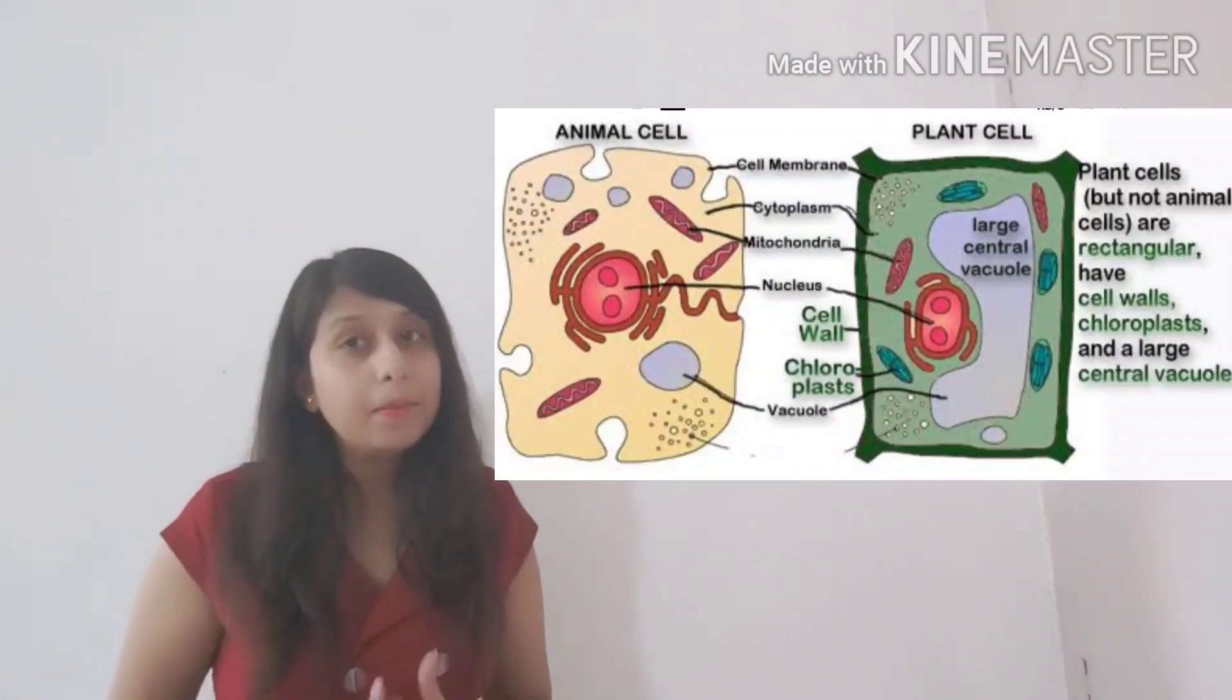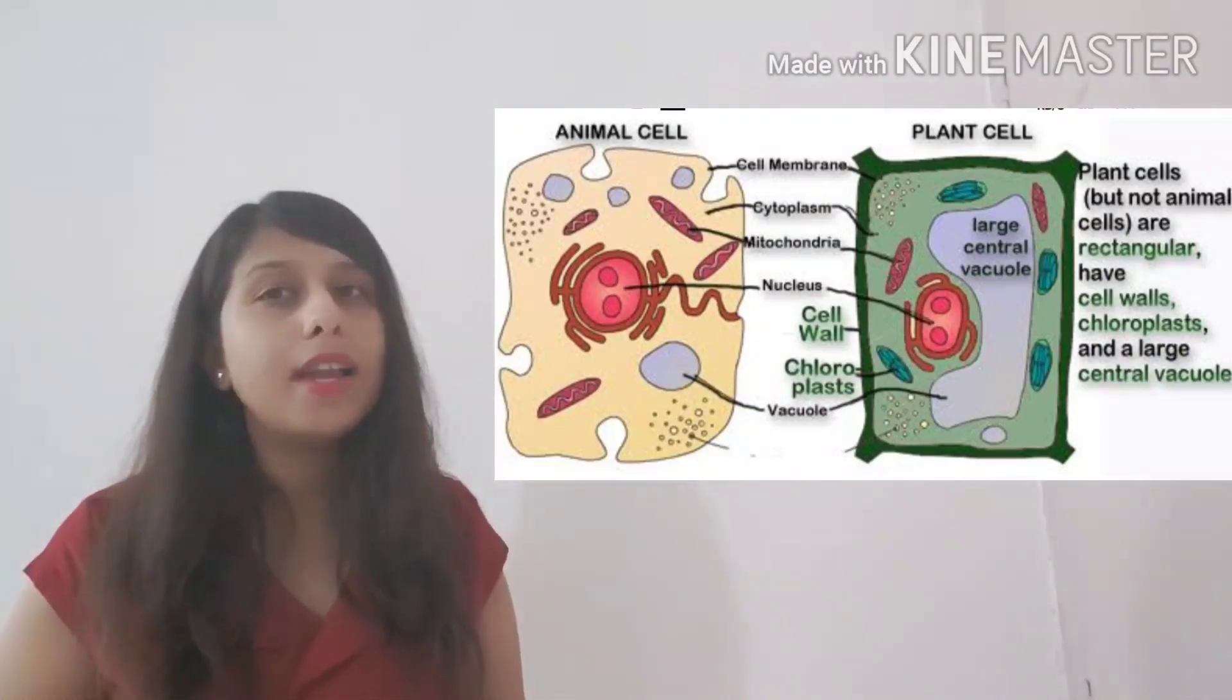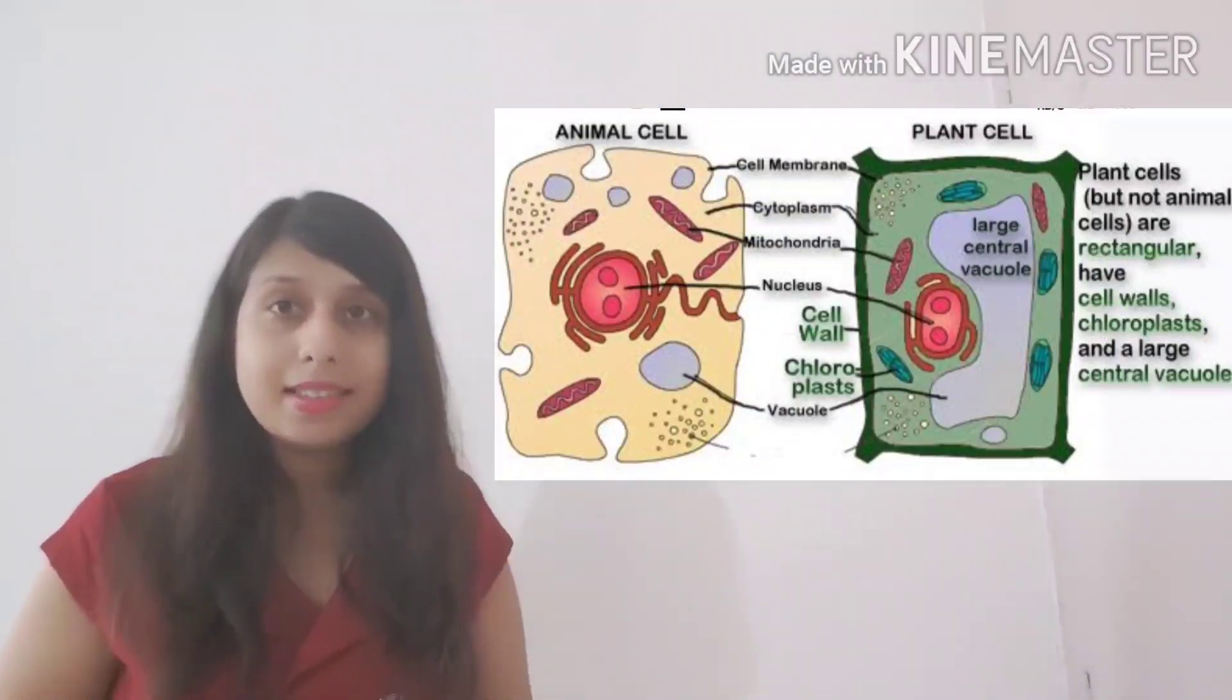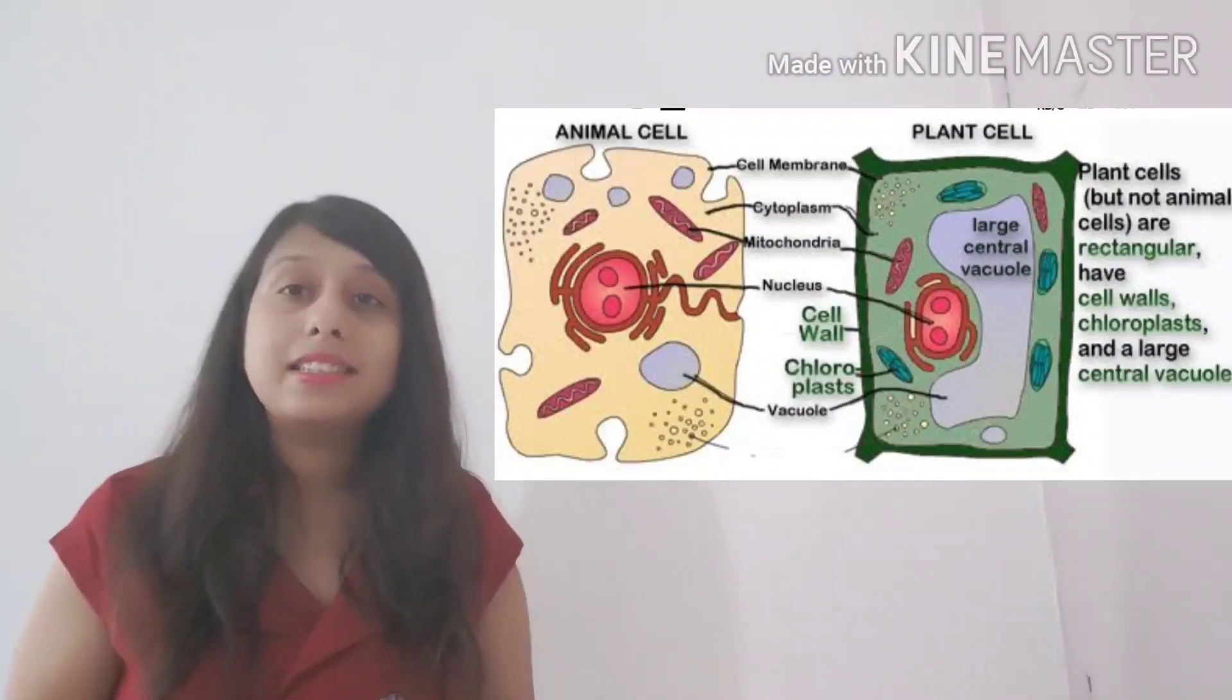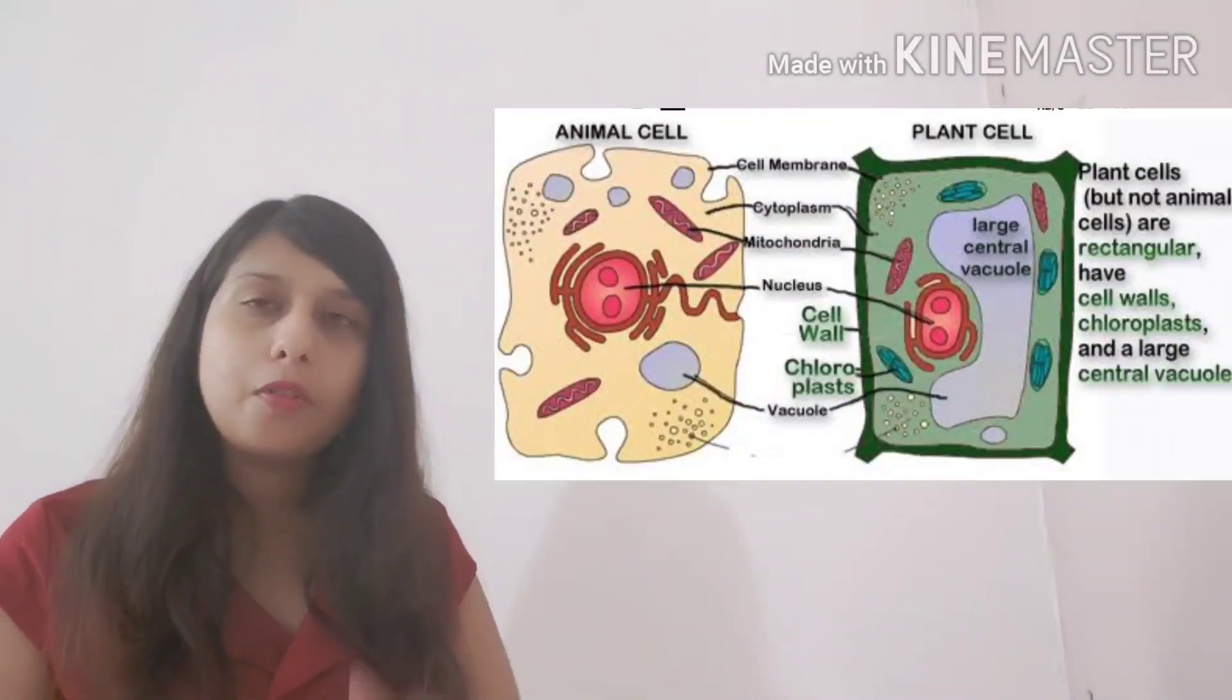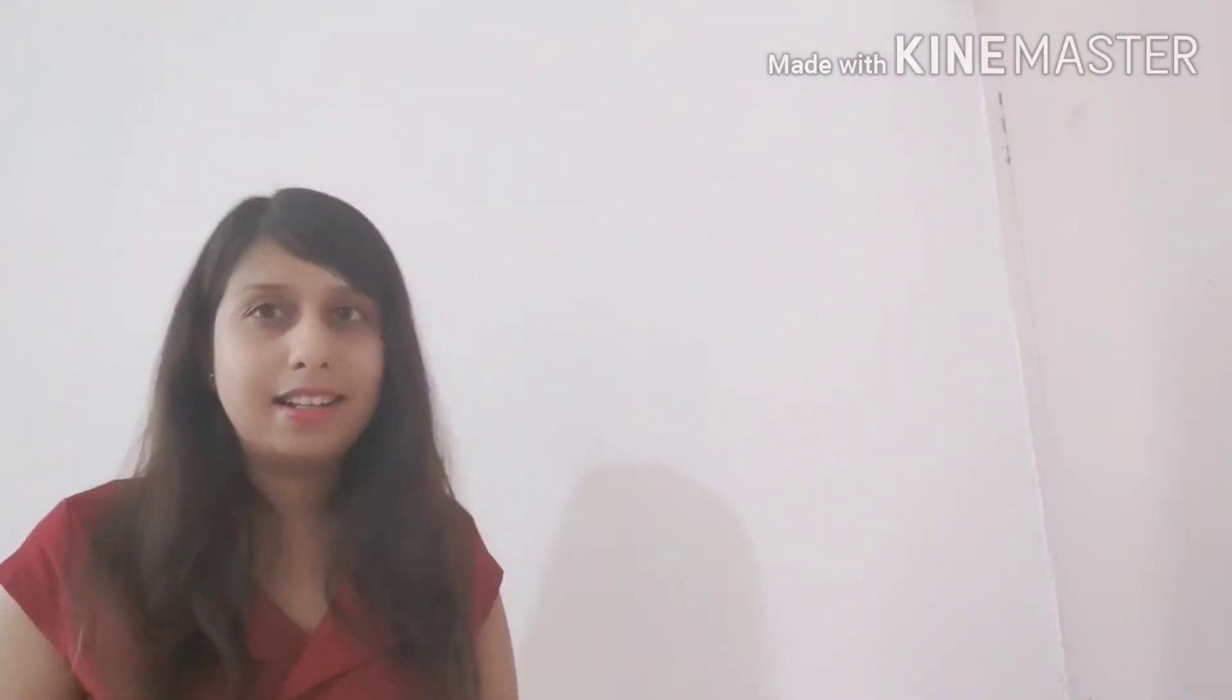So the animal cell only contains a cell membrane whereas the plant cell contains cell membrane as well as a cell wall which is made up of cellulose. The plant cell contains chloroplast whereas animal cell does not. The plant cell contains large vacuole which occupies about 70% of the portion of the cell, whereas the animal cell hardly contains vacuole.